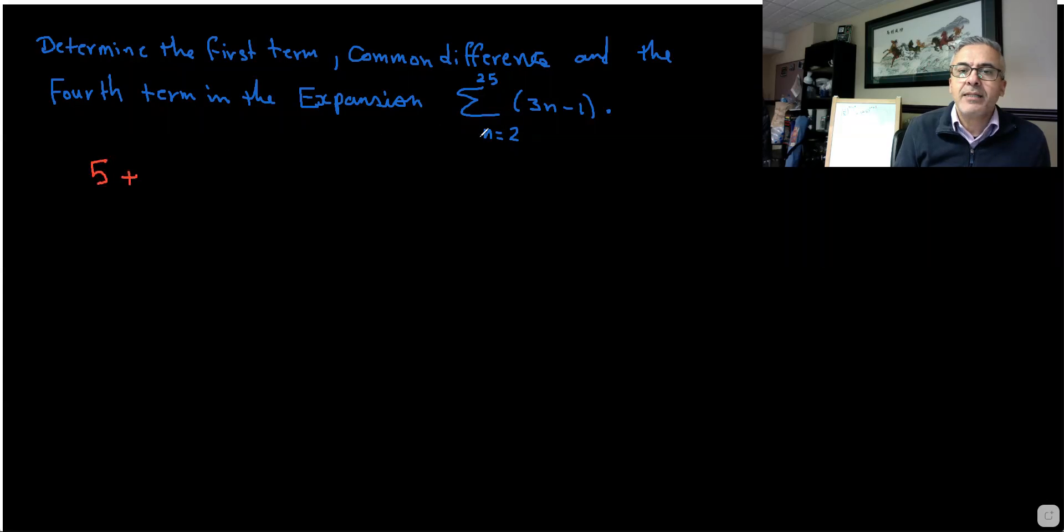Then plus sub n, the next number, which is 3. 3 times 3 is 9 minus 1 is 8.